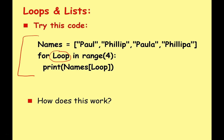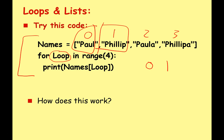The counter goes zero, one, two, three, and when it gets to four it stops. Remember the first index position of the array is zero, then one, then two, then three. When we run this program, loop will first be zero so it prints names zero which is Paul. Then loop becomes one and prints Philip, then two prints Paula, then three prints Philipa. This prints everything in our array nicely and simply, and it's easy to modify for a list of any length.